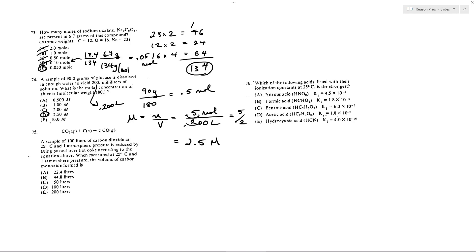75, a sample of 100 liters of carbon dioxide is passed over hot coke according to the equation above. When measured at 25 degrees Celsius and 1 atmosphere, the volume of carbon monoxide formed is what? So the trick here is if I have 100 liters of this and it's passed over carbon, I want to know how much carbon monoxide is formed. And the key is to see that we have a mole ratio of 1 to 2.